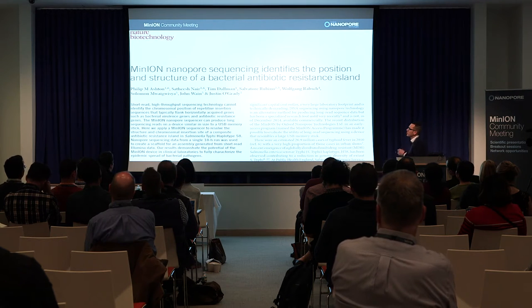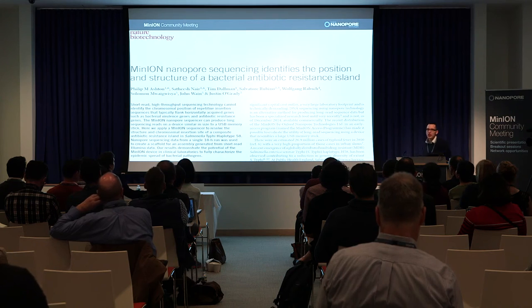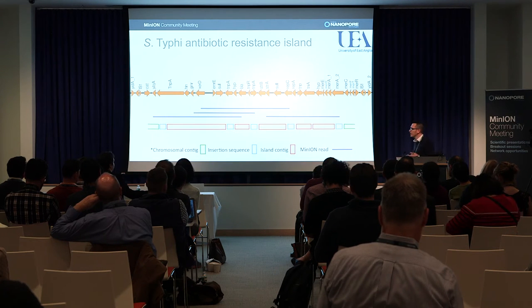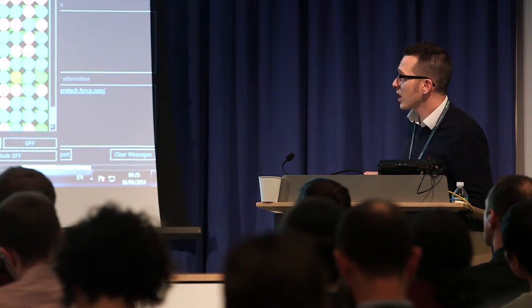We managed to publish what I think was the first paper to use MinION sequencing for bacteriology. We identified the position and structure of an antibiotic resistance island in Salmonella typhi — using the long reads from the MinION to figure out the structure of the island, which had broken using Illumina assembly because of repetitive regions. This is very much out of date already, because people are now doing de novo assemblies of full genomes. It's only a year old, but it's out of date.